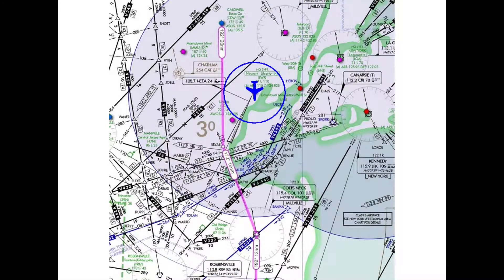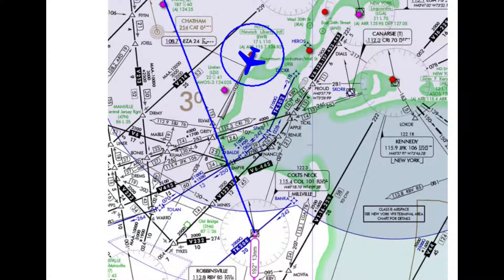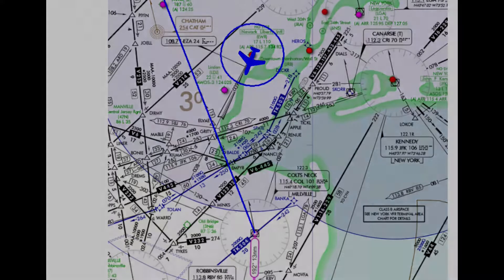As we join the flight, we have been receiving vectors out of Caldwell for the traffic in the Bravo, New York City area. We cross over the center of Newark International when we receive this instruction: Turn right heading 200, intercept the Colts Neck 350-degree radial inbound, then on course. A fairly simple and common VOR instruction, and it is definitely a legitimate option to tune and identify the VOR and do it that way. But let's see our options for doing it with the new tech.